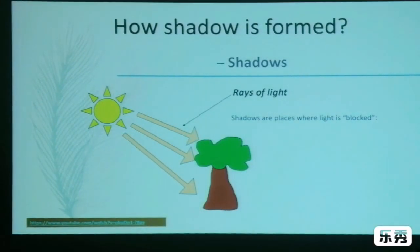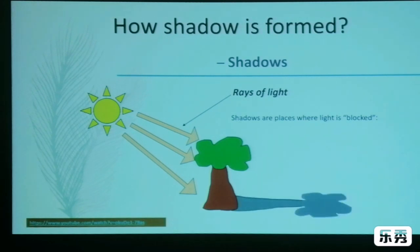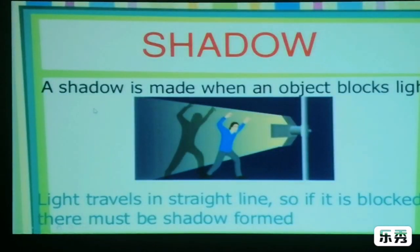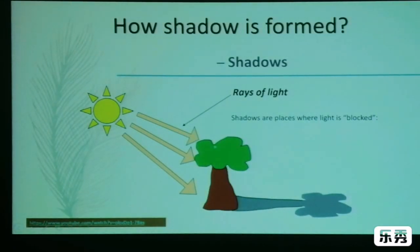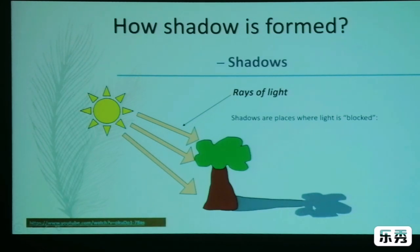Look at the picture and the diagram carefully. We have here the sun as the source of light. The sun's rays go to the tree, and our tree is an opaque object. It blocks the sun's light and forms a shadow on the opposite side.